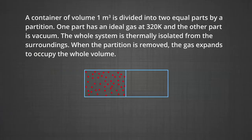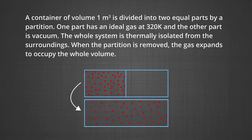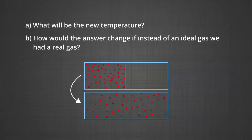A container of volume one meter cube is divided into two equal parts by a partition. One part has an ideal gas at 320 Kelvin and the other part is vacuum. The whole system is thermally isolated from the surroundings. When the partition is removed, the gas expands to occupy the whole volume, as shown in the given figure. What will be the new temperature?